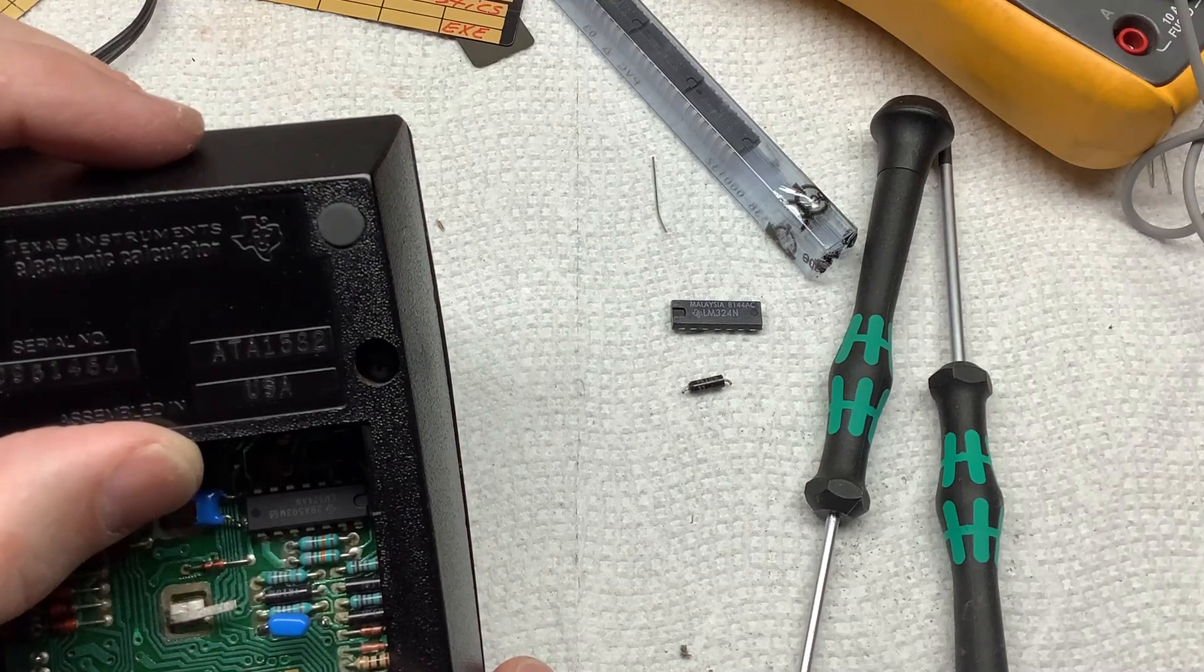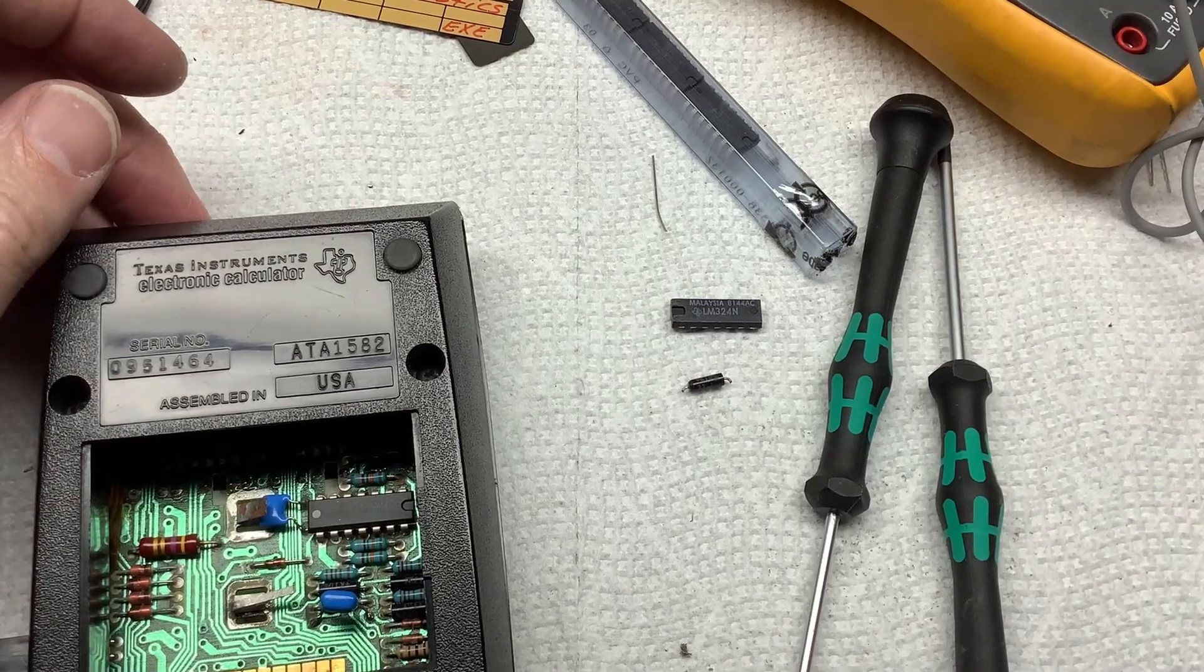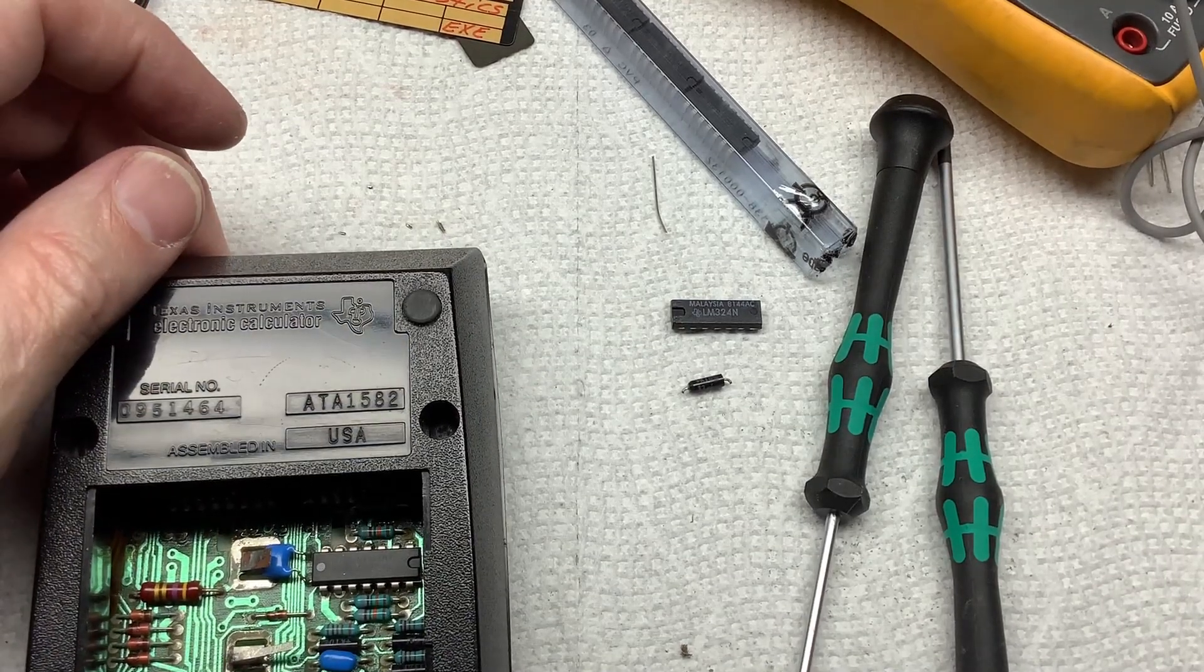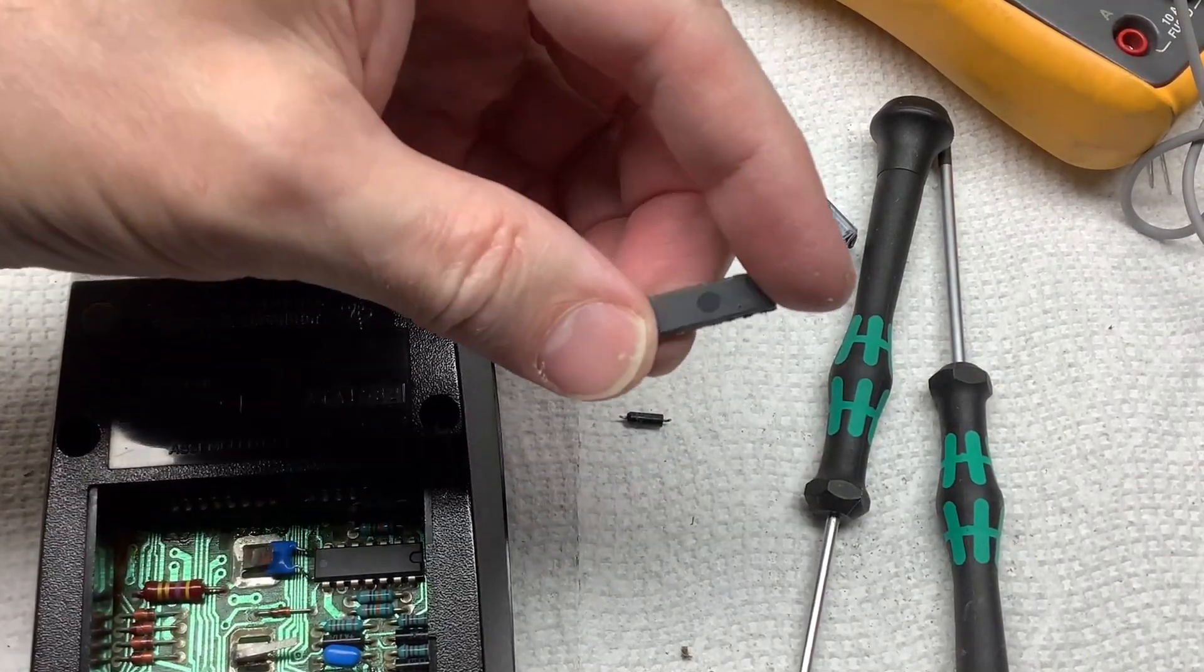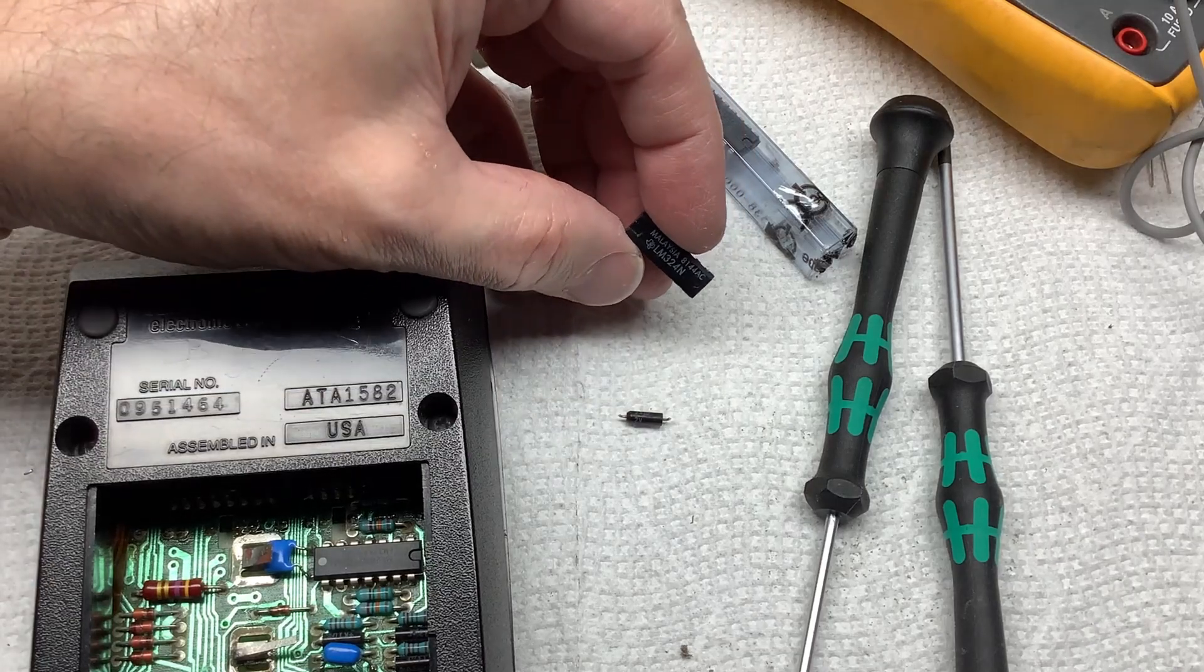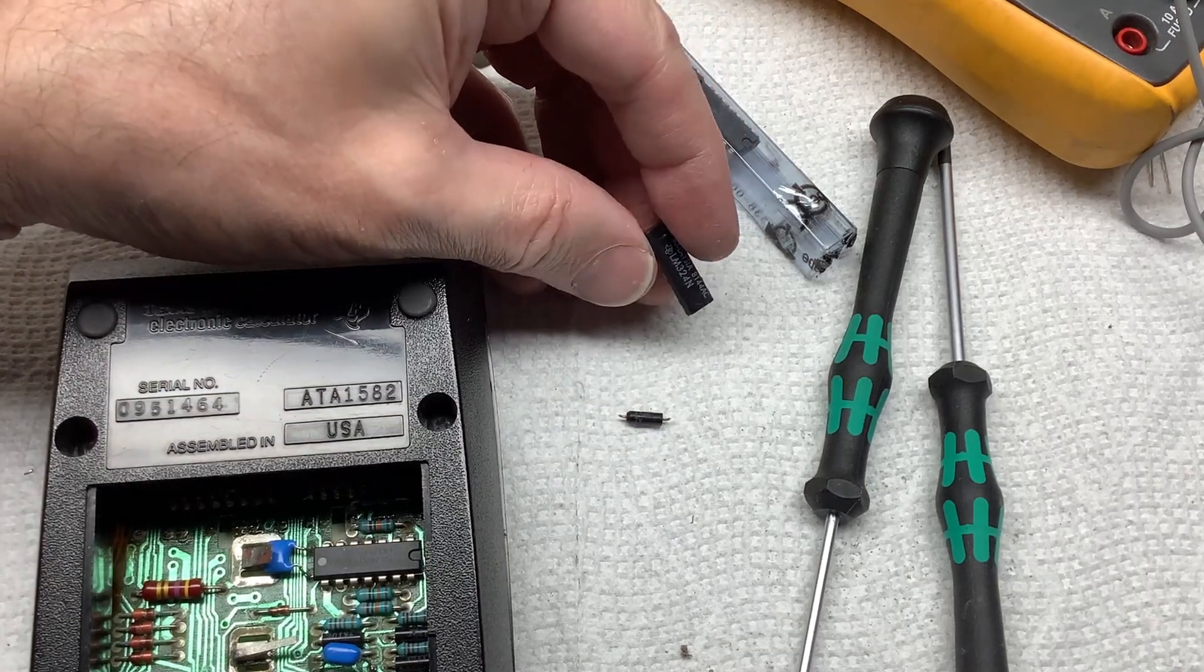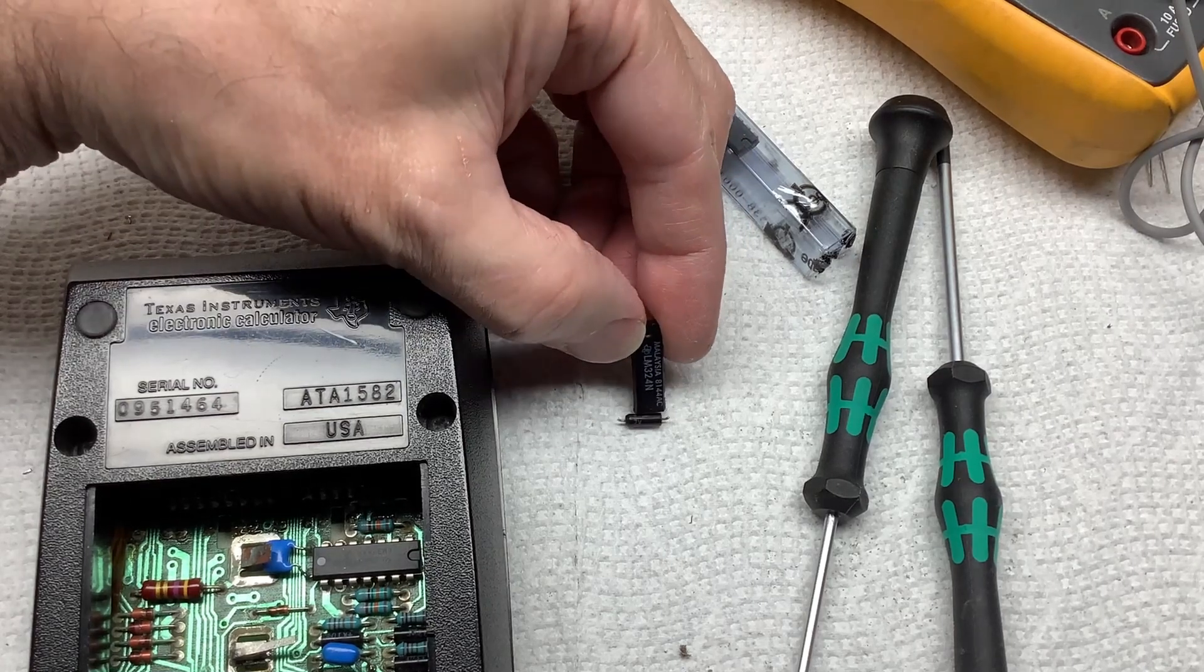So interesting. So it was the 324. The cap of course was also bad, but this 324 had failed. And that's really interesting to me because maybe there's something, I've seen a lot of these and I've wondered whether it was the cap that caused it or whether the 324 had actually failed. I'm starting to wonder now if maybe the 324s have got something going on with them.